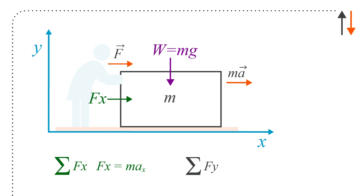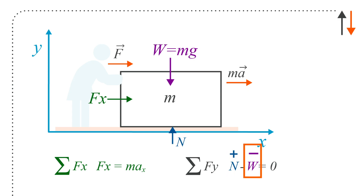We'll also have weight and normal force. The normal force is the external force holding up the block — the floor pushing on the block. Weight is always there. N is acting upward, so it's positive, and W is negative, so I've written it directly with a negative sign. Typically I'd write N plus W and say that W, or MG, is minus MG.